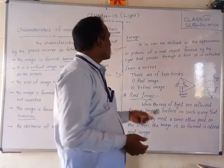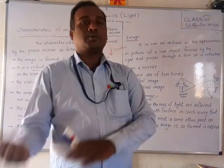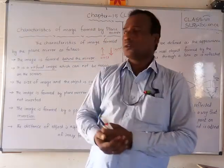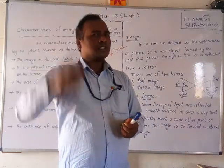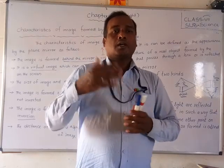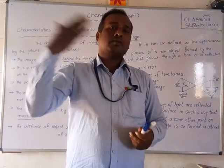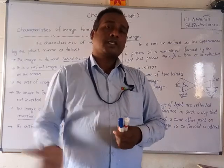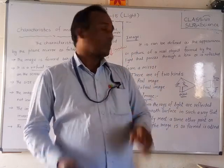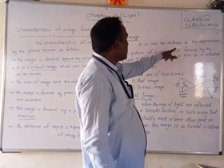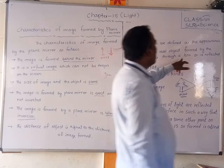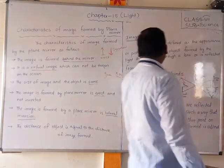Now we are going to discuss one very important point. What is an image? An image can be defined as the appearance or picture of a real object formed by light that passes through a lens or is reflected from a mirror. Whatever picture is captured on a screen after the light reflects from a mirror or passes through a lens — that is called an image.